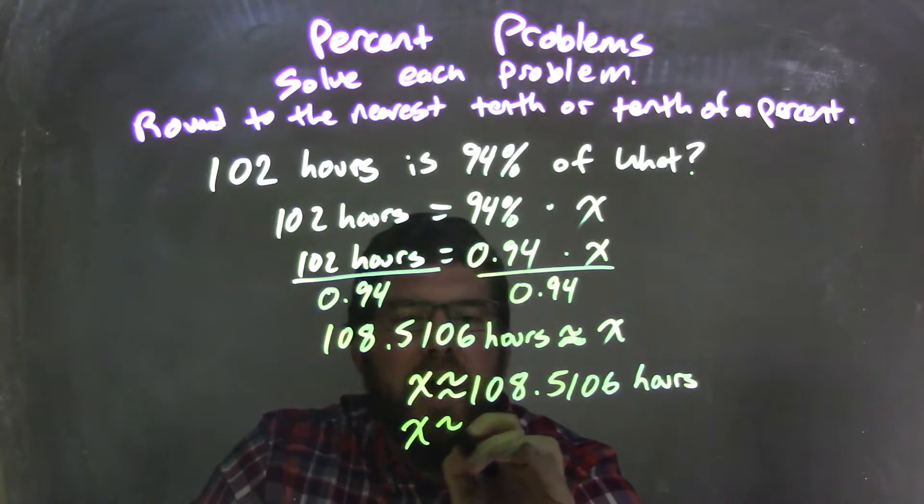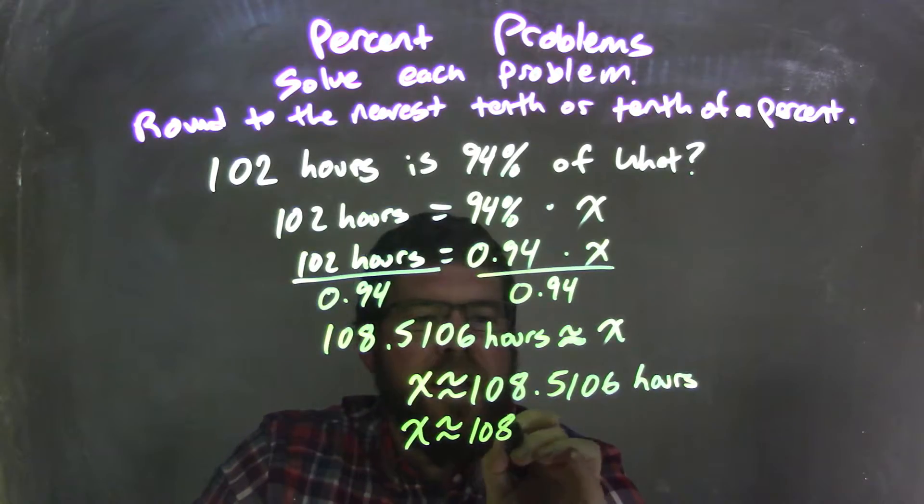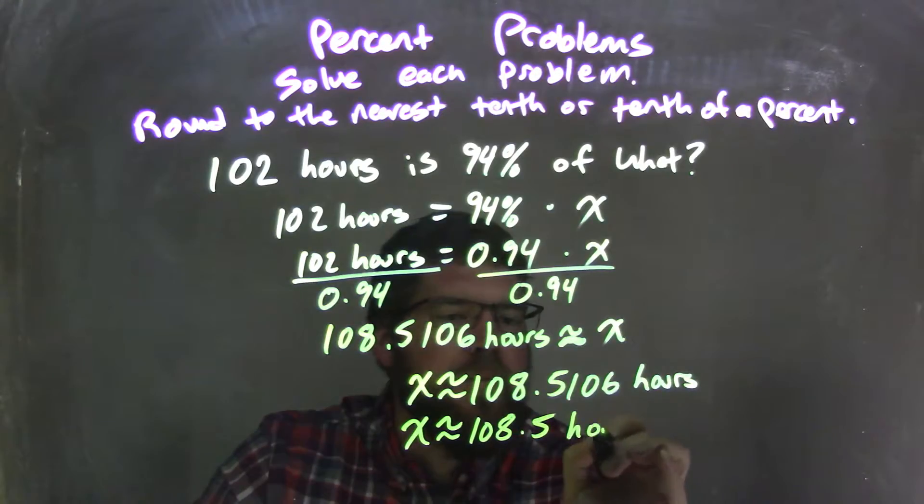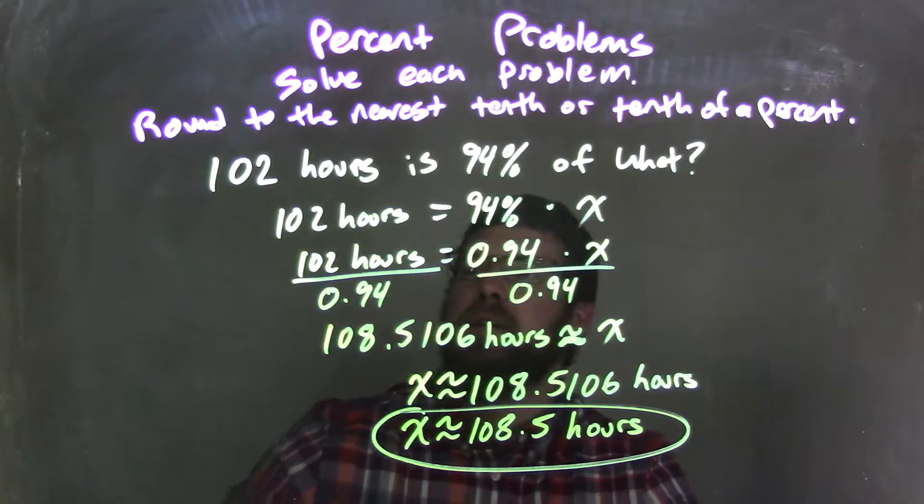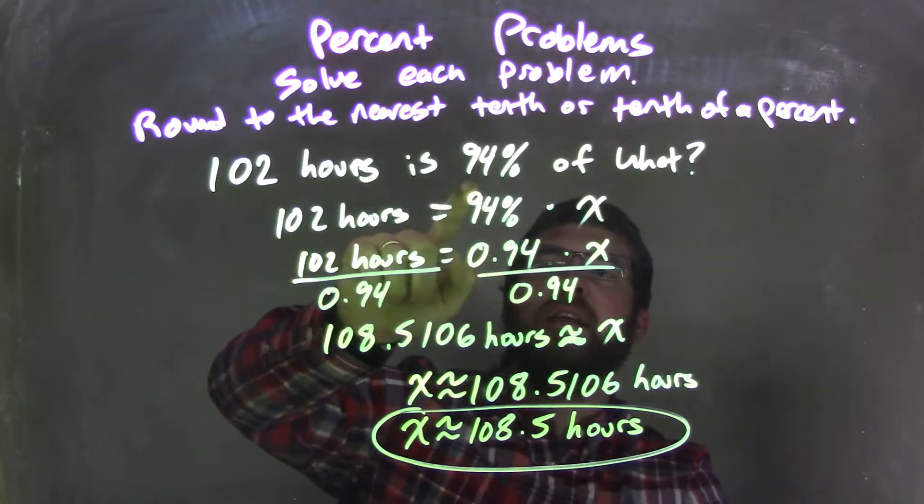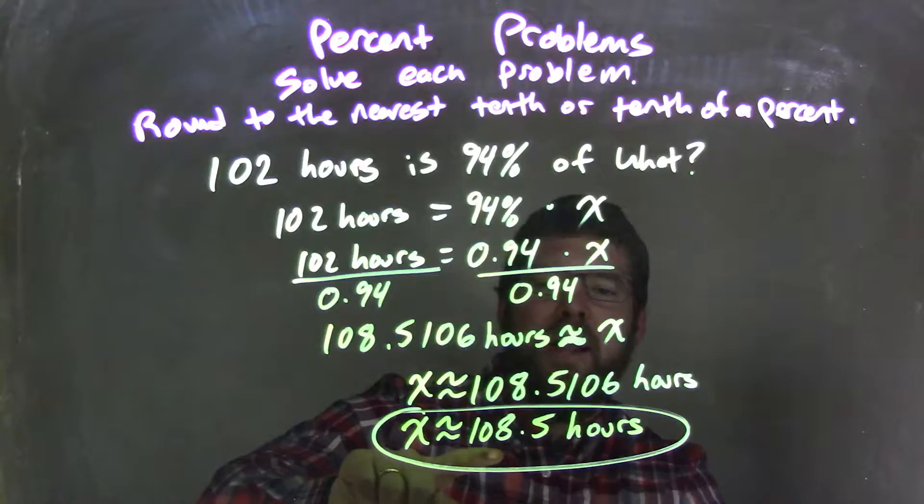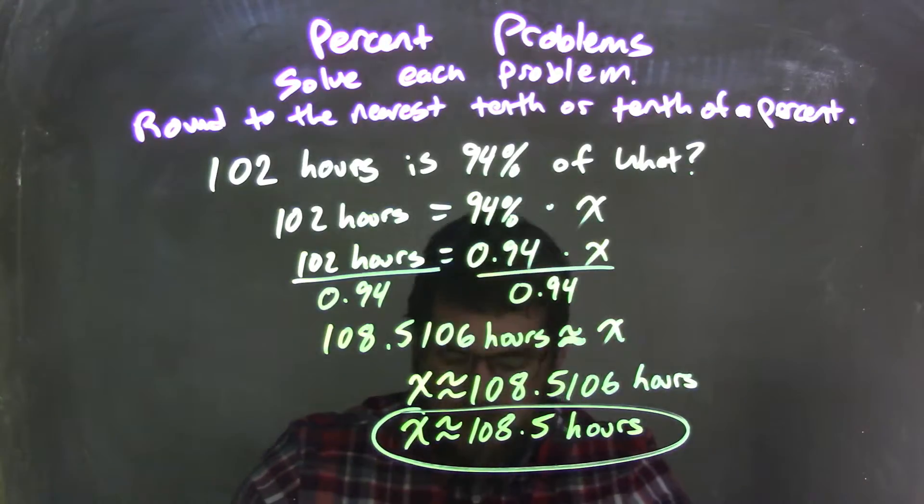So X is approximately 108.5 hours. That's our rounded answer and that's our final answer. And it answers our question here: 102 hours is 94% of 108.5 hours. So let's recap here.